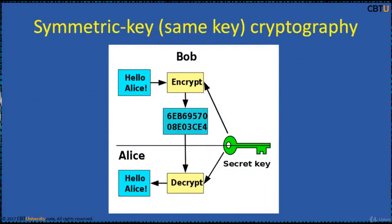Most block cipher algorithms are based on this structure. Symmetric key ciphers are implemented as either block ciphers or stream ciphers. In symmetric key cryptography, the same key is used for encryption and decryption. For example, Bob wants to send a message 'Hello Alice.' This is encrypted with a secret key, producing encrypted text. If this message falls into the hands of third parties, they cannot read it — it is in a non-readable format. When Alice receives the message, she decrypts it with the same shared secret key that Bob used to encrypt it.